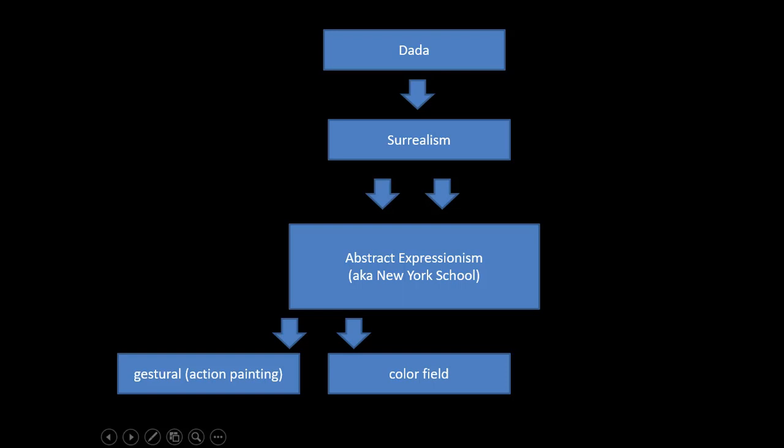In this online lecture we're going to look at two styles of art: abstract expressionism and pop art. These two styles date to the 1950s and 1960s, and as you'll come to see, even though they are so close chronologically, they're very different both visually and ideologically.